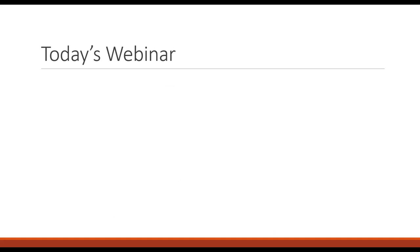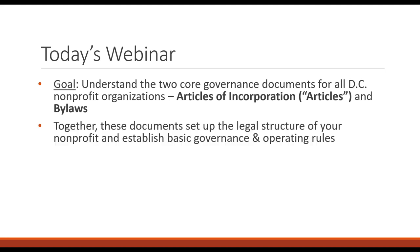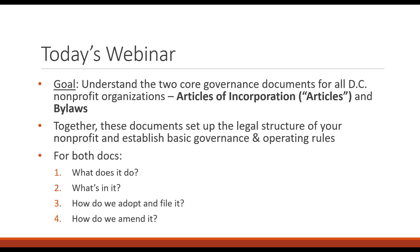Here's the outline for today's webinar. Our goal is to understand the two governance documents for all DC organizations: your articles of incorporation and your bylaws. Together, these documents set up the legal structure of your nonprofit and establish basic governance and operating rules. For both documents, we're going to ask: what does it do? What's in it? How do we adopt or file it? And how do we amend it?